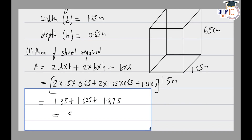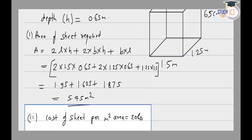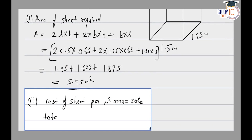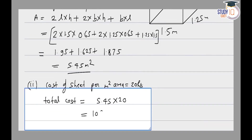Adding all terms, the total is 5.4625 meter square — that is the area of the required sheet. Now for the cost, given in the question: cost of sheet per meter square = 20 rupees. So total cost = 5.4625 multiplied by 20, which gives 109 rupees. This is the cost required.